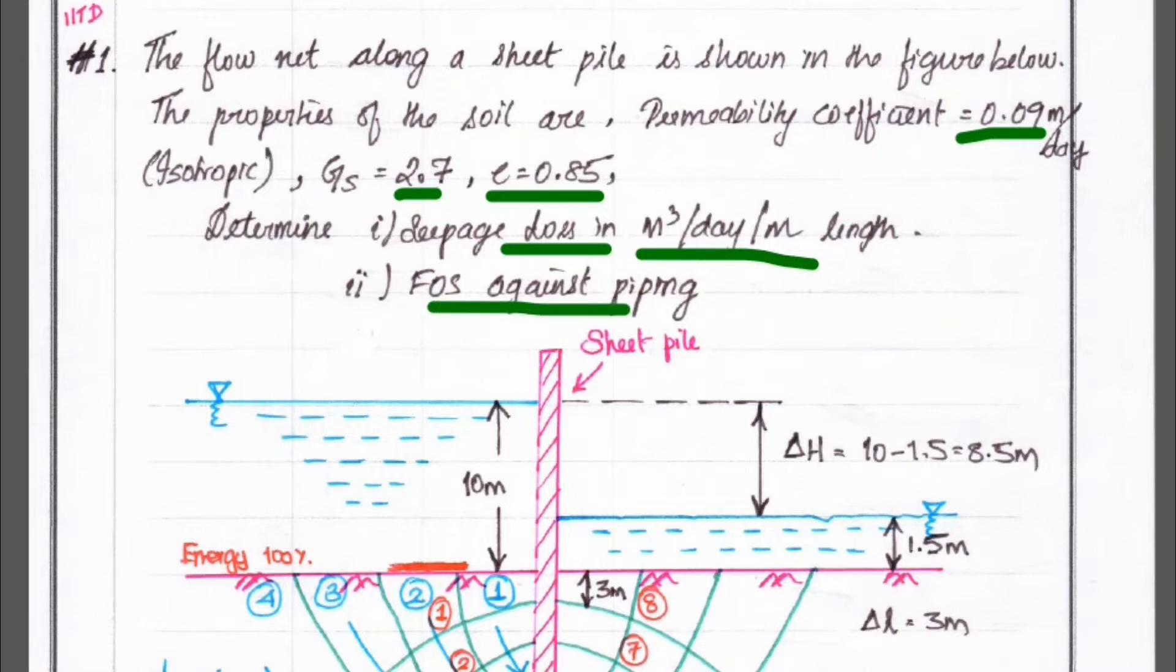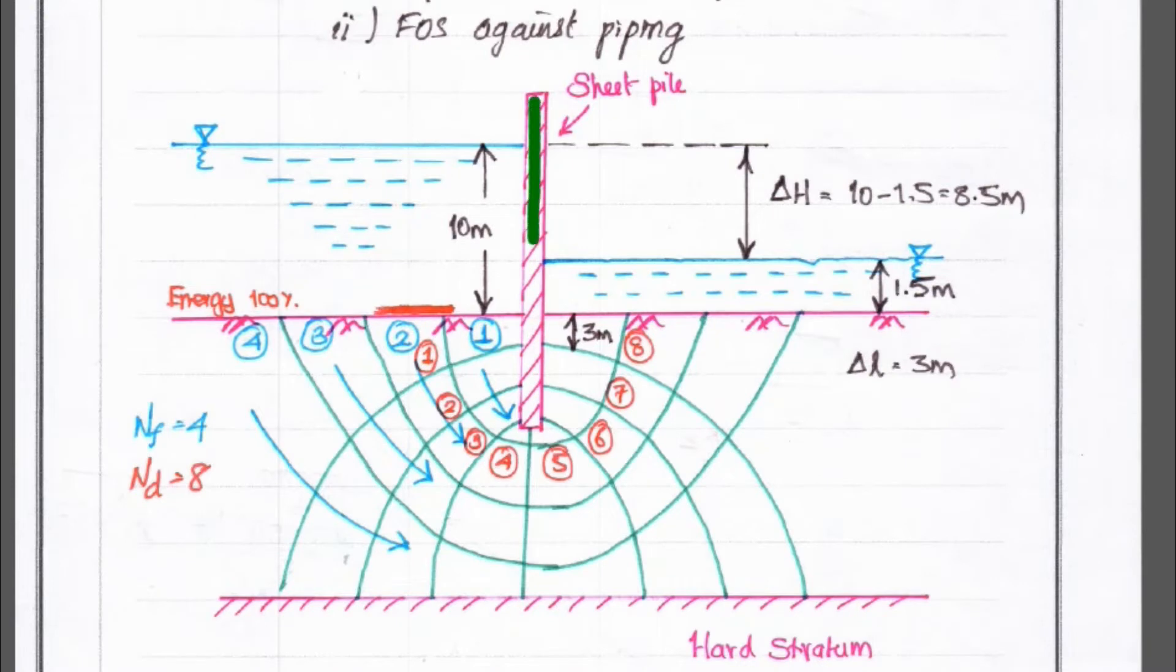So, first we have to see the diagram. Now, this is sheet pile. Sheet pile is over there and in upstream side the height is 10 meter above the ground surface and downstream side is 1.5 meter above the ground surface. So, the water surface water level is at 10 meter and here 1.5 meter.